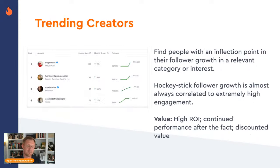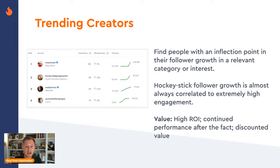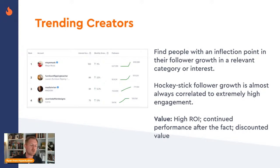The second thing to look out for is trending creators — people in your sort of segment where your audience likes to hang out, but who are seeing rapid growth before they become a national name. Finding people at that inflection point — all of a sudden they're starting to get lots and lots of followers. If we invest in them now and they continue to grow, we're going to see a huge return on that investment because our content is still going to be out there as they continue to get new followers. There's a huge benefit for your overall ROI.